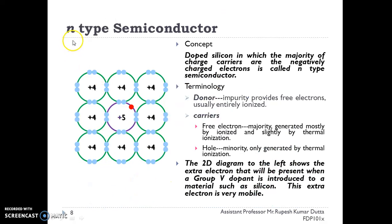Let's see what is an n-type semiconductor. This is doped silicon in which majority of the charge carriers are negative, which are electrons, and this is called n-type semiconductor. These are also known as donor type of semiconductor. In this, the majority carriers are free electrons and minority carriers are holes, which are generated by thermal agitation.